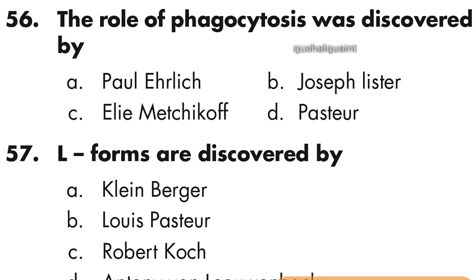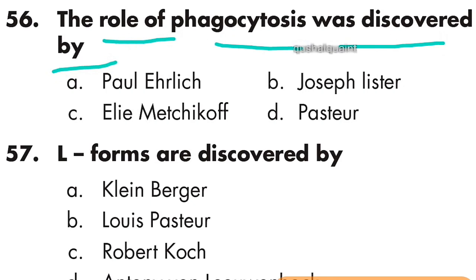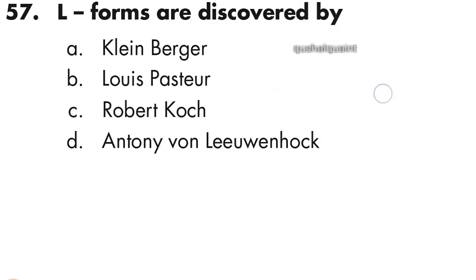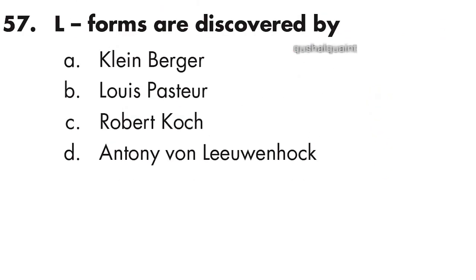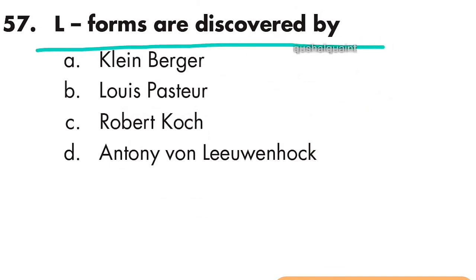Question number 56: The role of phagocytosis was discovered by Elie Metchnikoff. Option C is right — Metchnikoff. Question number 57: All spore forms were discovered by Cohn. Option A is right — Cohn.